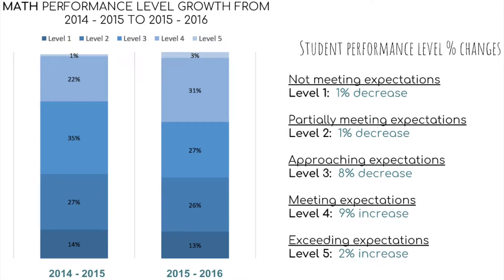Looking at math performance level growth from 2014-15 to 2015-16, at level 1 there was a 1% decrease, and at level 2 also a 1% decrease from 27% to 26%. At level 3, approaching expectations, there was an 8% decrease. At level 4, meeting expectations, there was a 9% increase, and at level 5, exceeding expectations, there was a 2% increase — areas we should celebrate.